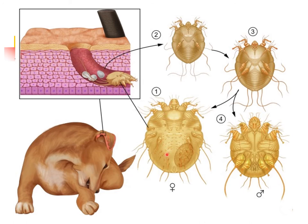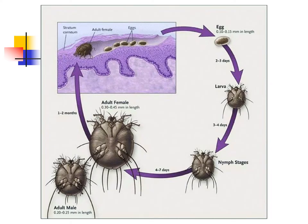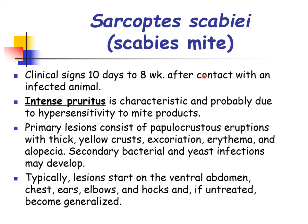In experimental conditions on a rabbit, the entire life cycle from egg to adult lasts about 10 days. According to literature, a typical life cycle lasts two to three weeks. The life cycle shows the adult female burrowing into the keratin layer of the skin, laying eggs that develop into larva, then molting through protonymph and tritonymph nymphal stages before becoming the adult.